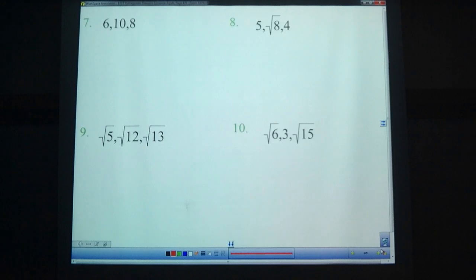Let's look at a couple more examples. Try these ones out on your own first, and then we'll go over them as a class. Okay. So 6, 8, 10. 6 squared, 36. 8 squared, 64. 10 squared, 100. Does 36 plus 64 make 100? Yes, it does. So that is a right triangle. Yes, right.